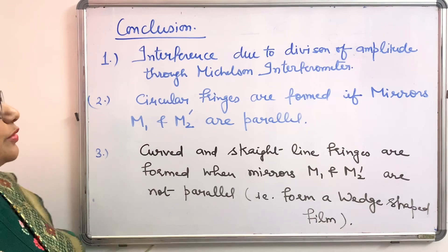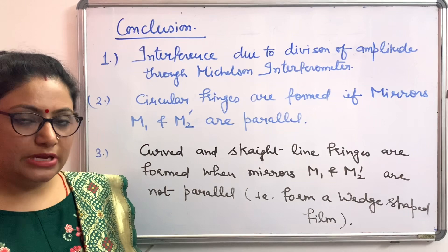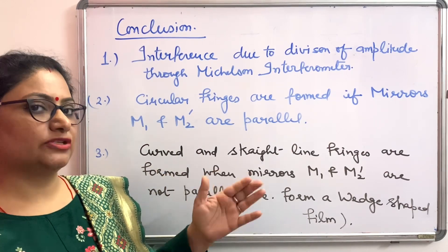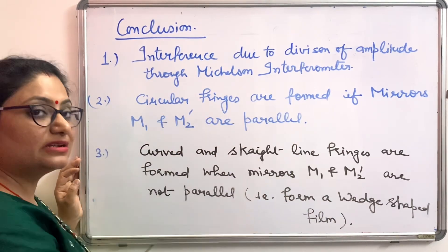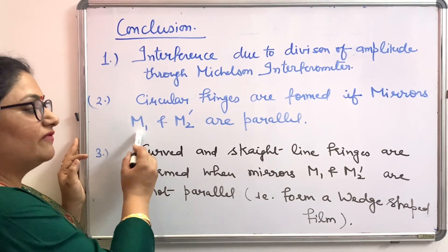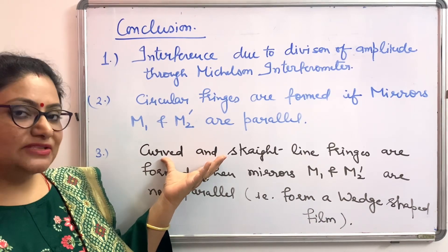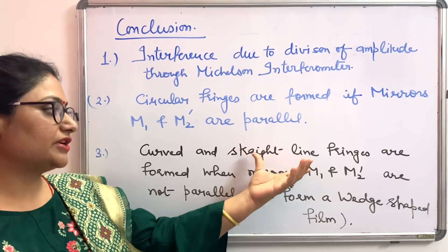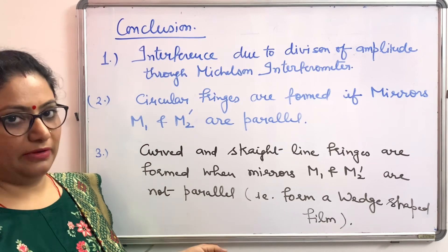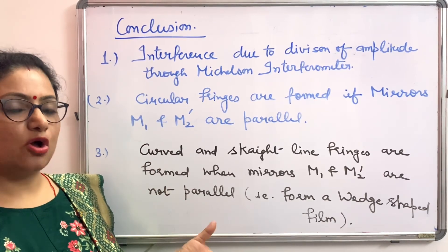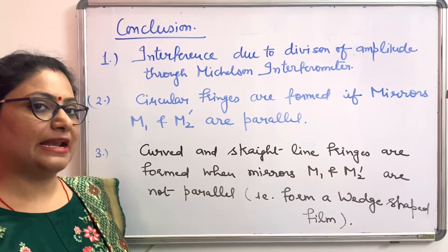In conclusion, we have studied the Michelson interferometer, a device based on the phenomenon of interference — specifically interference due to division of amplitude — where amplitude is divided and then reunited after reflection through mirrors M1 and M2 to give an interference pattern. Circular fringes are formed when M1 and M2 are exactly perpendicular, making M1 and M2 dash parallel. Localized fringes — either curved or straight line — are observed when M1 and M2 dash are not parallel and form a wedge-shaped film. Please like this video, subscribe to my channel, and share with your peer group. Thank you.